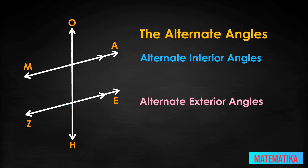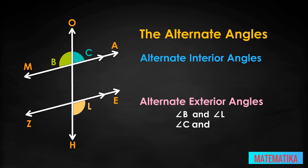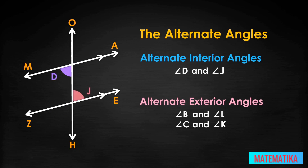Here are both pairs of alternate exterior angles: angle B and angle L, and angle C and angle K. And here are both pairs of alternate interior angles: angle D and angle J, and angle F and angle G.